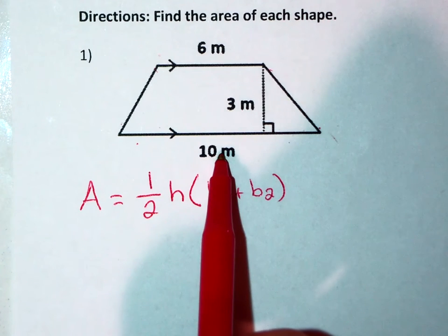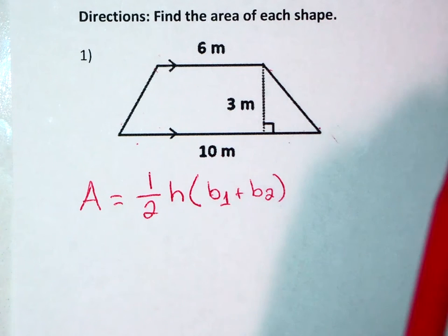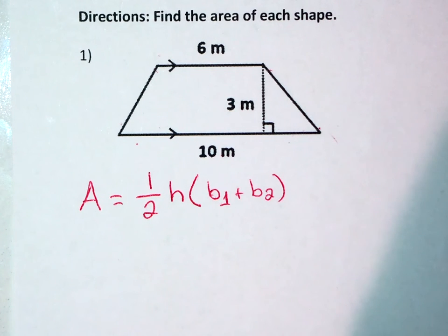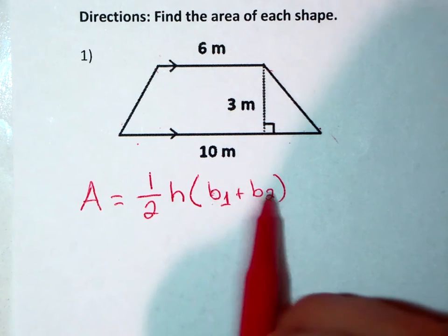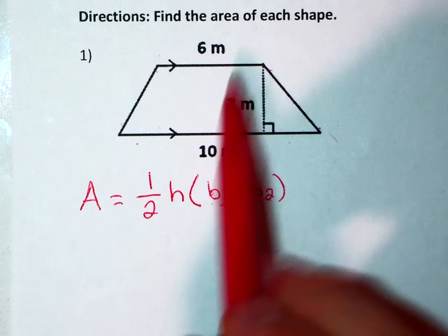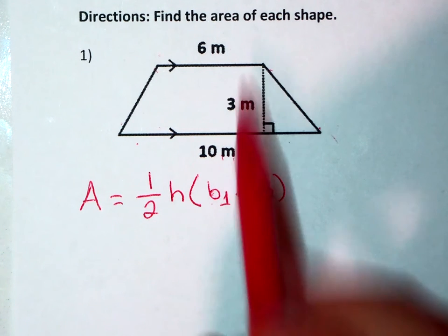So here I have a 10 and a 6. It really doesn't matter what order because addition is commutative. Either order works. It can be 6 plus 10 or it can be 10 plus 6.